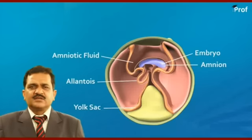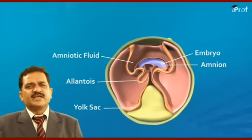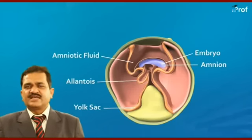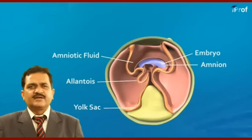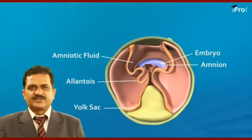The allantois is another extra-embryonic membrane. This membrane is related to excretion and respiration.